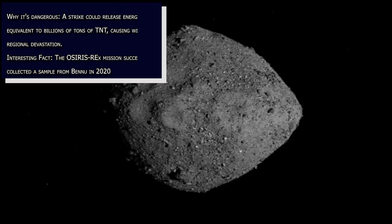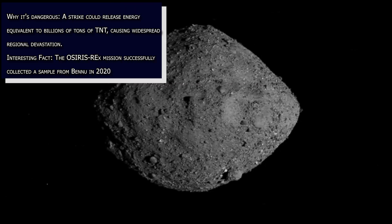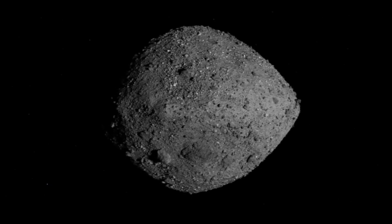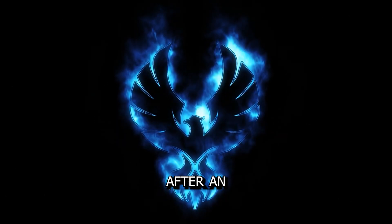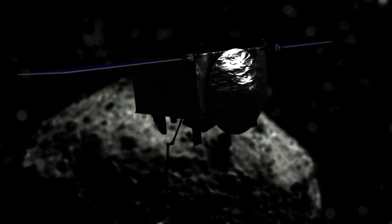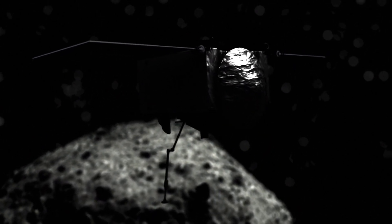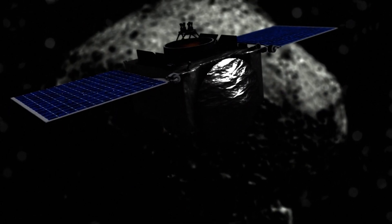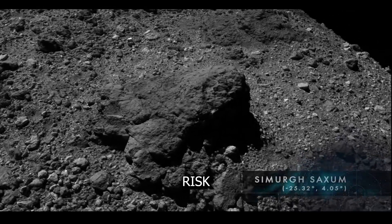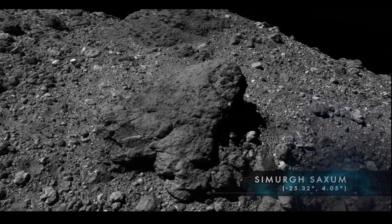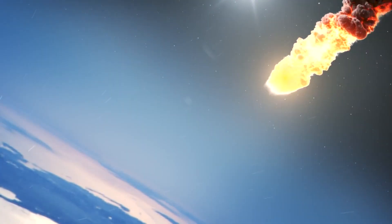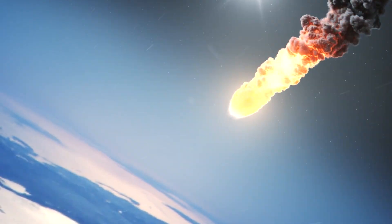Number two, 101955 Bennu, 1999 RQ36. Discovered in 1999 and estimated at 490 meters or 1,610 feet diameter, Bennu, named after an Egyptian phoenix, is both captivating and concerning. It's been extensively studied by space missions like OSIRIS-REx, giving us unprecedented insights into its composition, structure and trajectory. Currently, Bennu poses the greatest known risk of any asteroid we're tracking, with an estimated one in 2700 chance of impacting Earth in the late 22nd century, most likely around 2182.